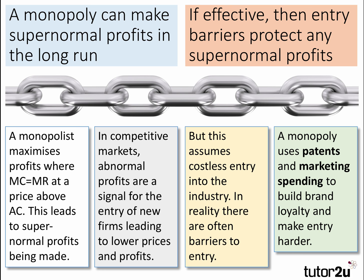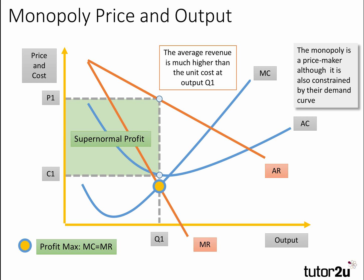So here's an example of explaining how a monopoly can make supernormal profits in the short run and in the long run — crucially building little links and chains of reasoning into your analysis. The analysis could and should be supported where appropriate by an analysis diagram.